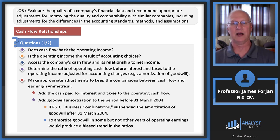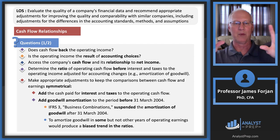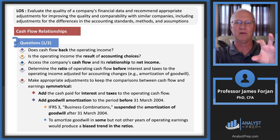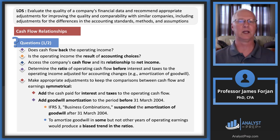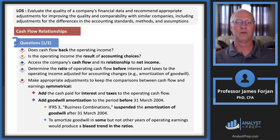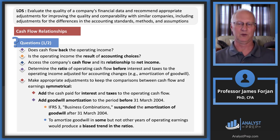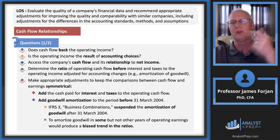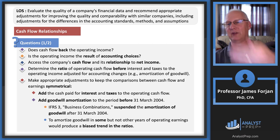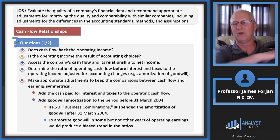Is the operating income the result of accounting choices? Even inside of accrual-based accounting, we have lots of ways to decide when to recognize revenues and by how much to recognize expenses. Operating income ought to be a measure of the quality of the product lines — make something for pennies and sell it for dollars. But accounting choices create the possibility of distorting that, and any such choices will reverse themselves at some point, so we need to look at this over time.